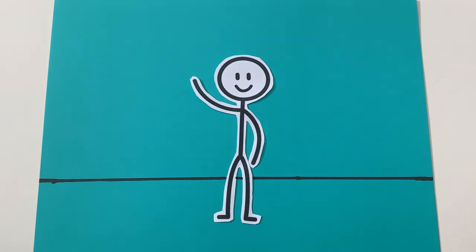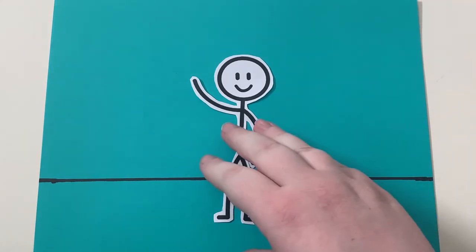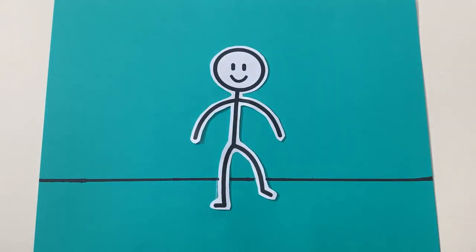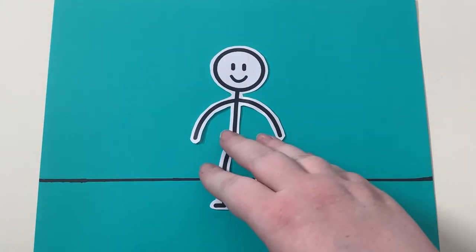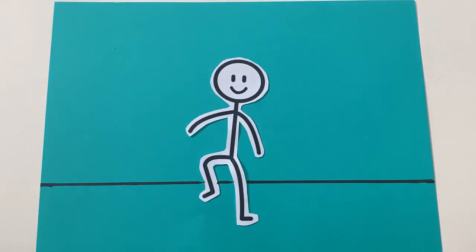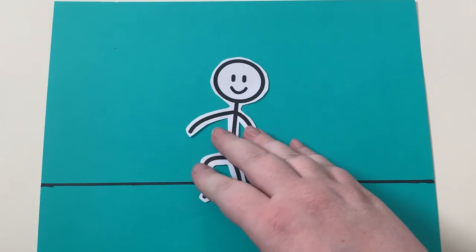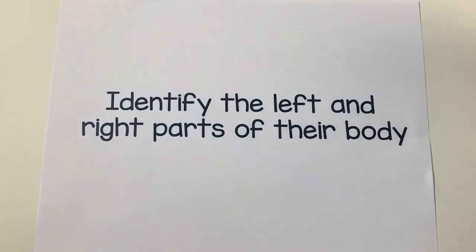Then you might ask, can you raise your left leg? Or can you raise your right knee? Doing this will help the child learn to identify the left and right parts of their body.